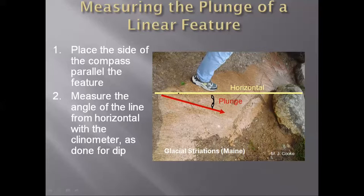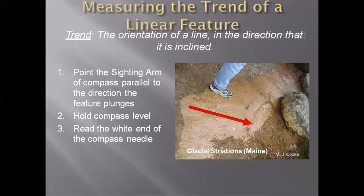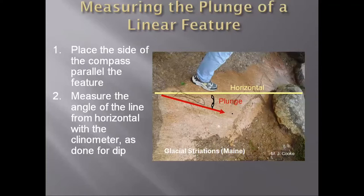For plunge, you have to place the sides along the line — the sides of the Brunton. For trend, you have to use your sighting arm and make it parallel to the direction of the feature, and then you just read the white end of the needle. Similarly, the plunge measurement is very similar to what we do for dip — you make the sides of the Brunton parallel to the feature.